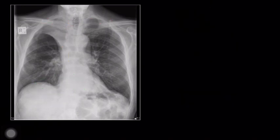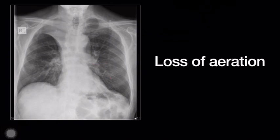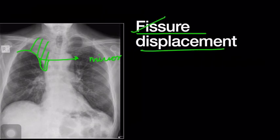At this juncture, we shall see whether this actually fits into collapse. Now let's revise the direct and indirect signs. The white opacity refers to loss of aeration — this is one of the direct signs of collapse, and that is present. Now let's see about this sharp margin which delineates the opacity — it is nothing but the minor fissure, satisfying another direct sign of collapse: displacement of the fissure.